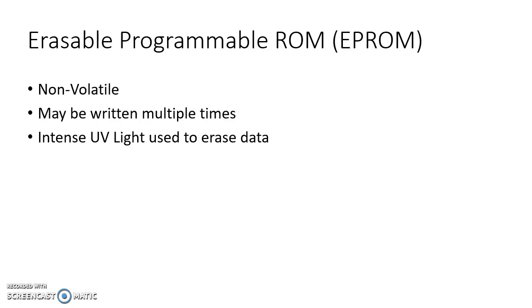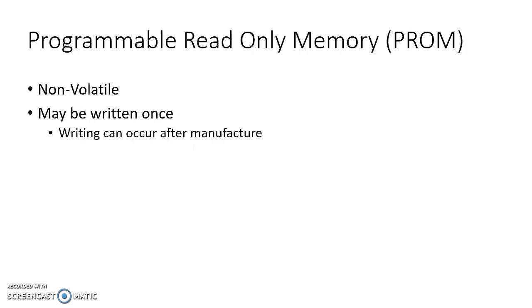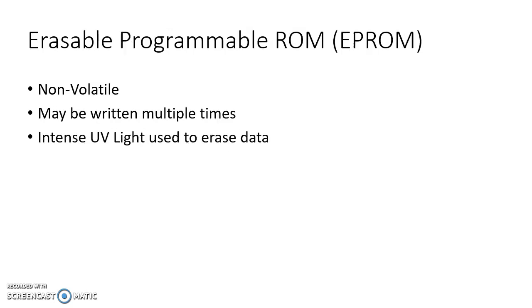The next evolution is: wouldn't it be great if we could just wipe out and start over again? So EPROM — erasable programmable read-only memory. All of these types are non-volatile and contain data and programs. ROM is non-volatile. PROM is non-volatile and can be written once. EPROM is non-volatile, contains data and programs, but it can be rewritten multiple times.